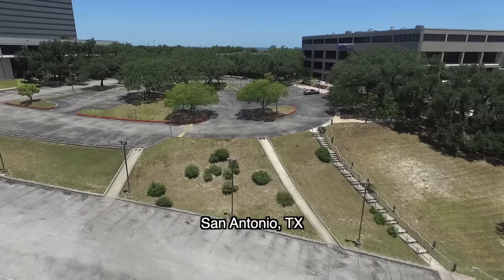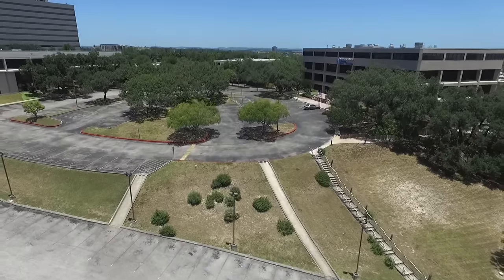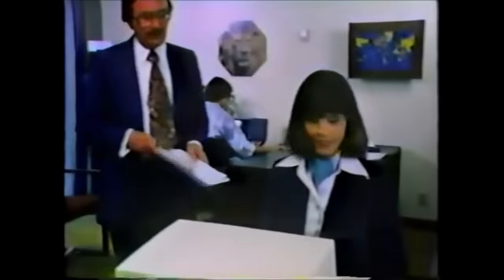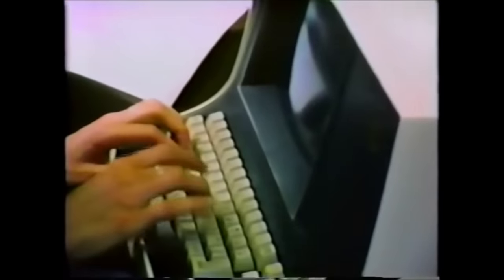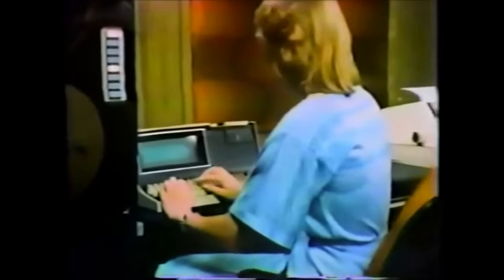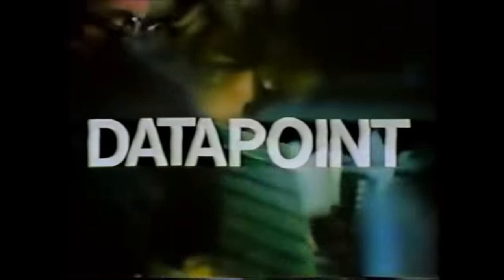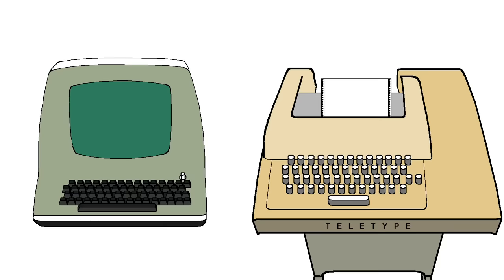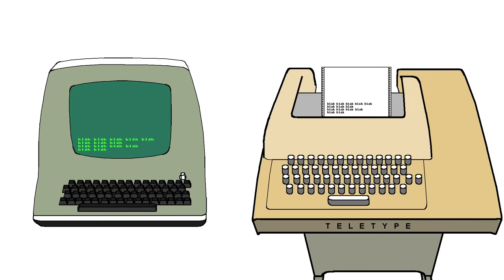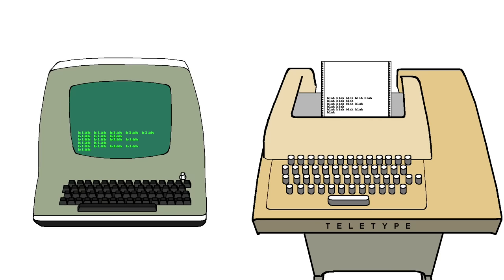A few years ago I traveled to the birthplace of the glass teletype, which was invented by Datapoint Corporation in San Antonio, Texas. This product was known as the Datapoint 3300, which began development around 1967 and first started shipping to customers in 1969. The idea would be that it would receive serial data and print the characters to a screen, usually at the bottom. And then as more data comes in, the information would scroll up the screen and eventually disappear — so there would be no permanent record of what was printed, like a teletype.